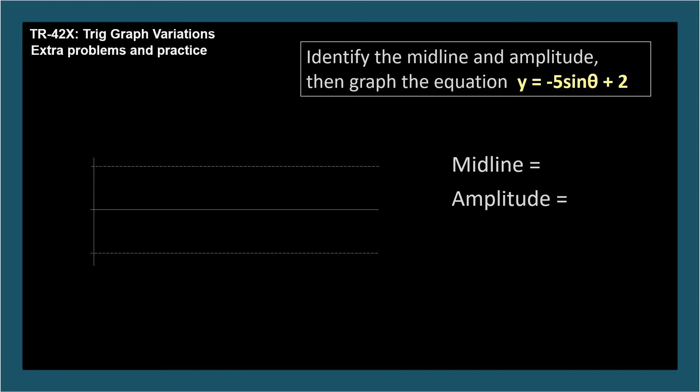The midline and amplitude can be read right from the equation. The midline is 2, and A is negative 5. The amplitude is the absolute value of A, so 5. And the wave will oscillate up and down 5 units away from the midline of 2, so between 7 and negative 3. Because A is negative, the curve will oscillate in the opposite direction as y equals sine theta. So, it will start downwards from the origin rather than upwards.